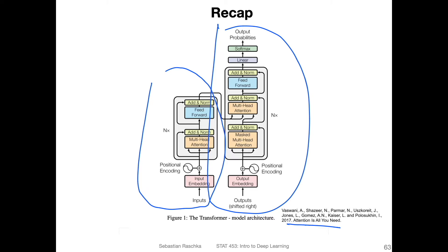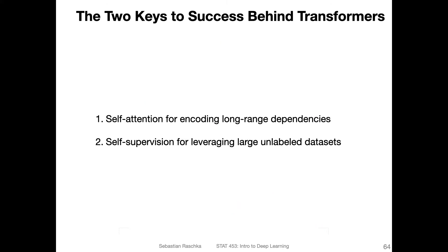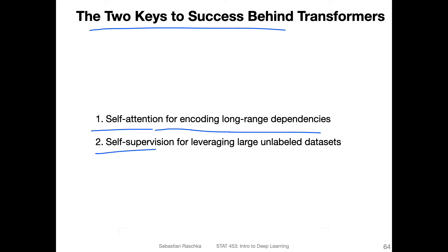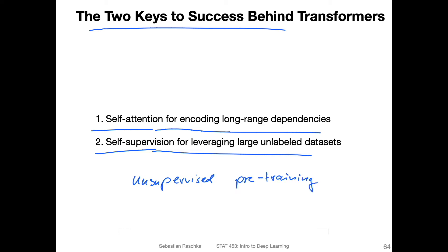Big picture wise, I would say the two keys to success behind all these transformer models are: first, the self-attention mechanism for encoding long-range dependencies or contexts; and the other one is self-supervision for leveraging large unlabeled datasets. This is also often called unsupervised pre-training. Originally it was called unsupervised pre-training, but nowadays the term self-supervised learning has become more popular.